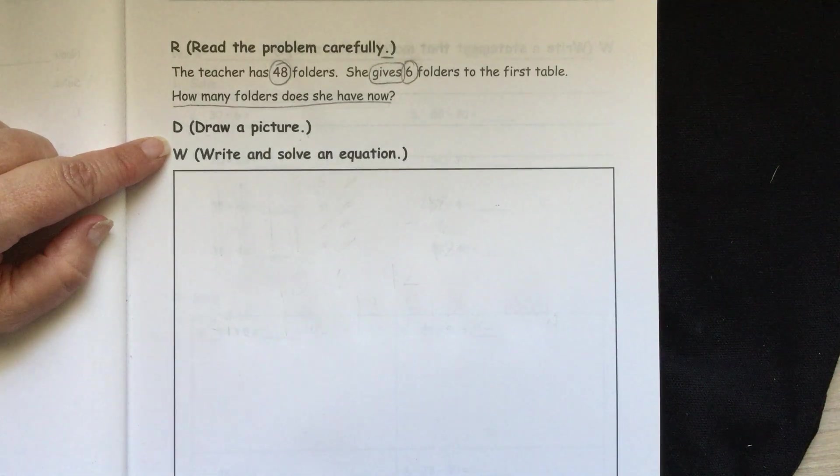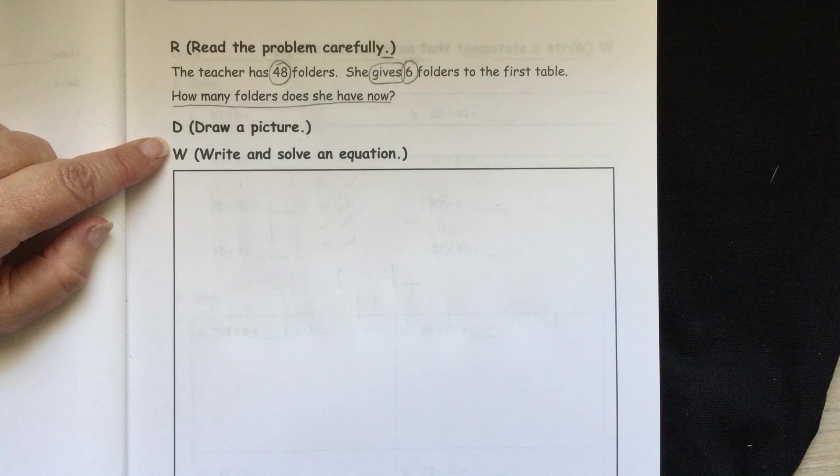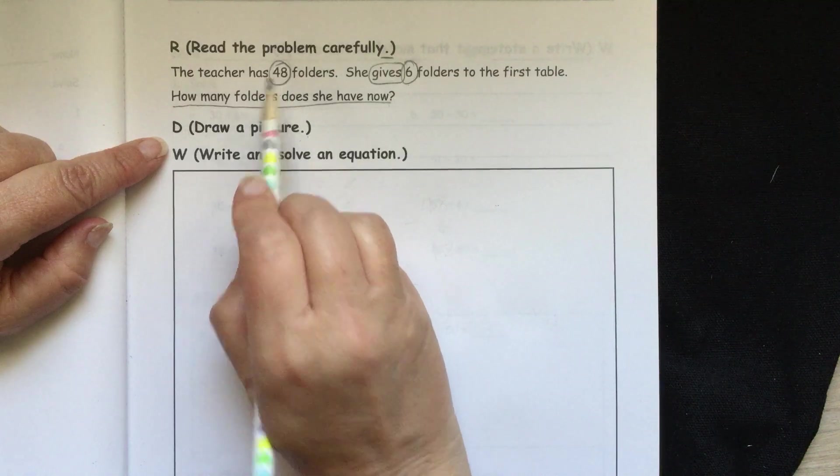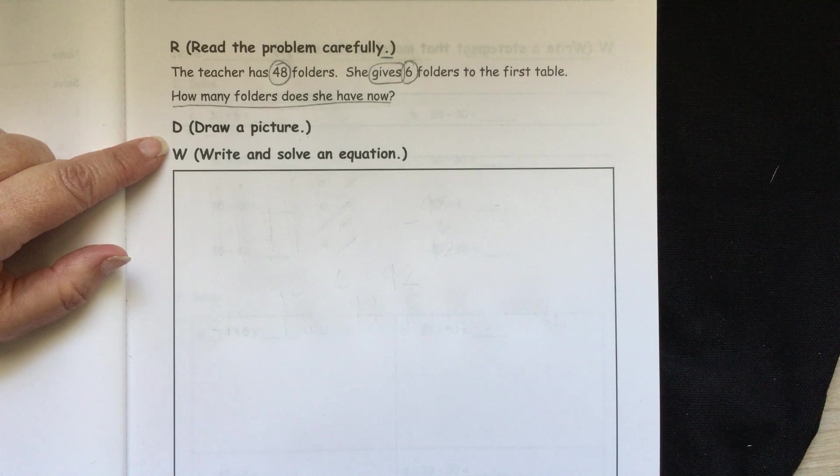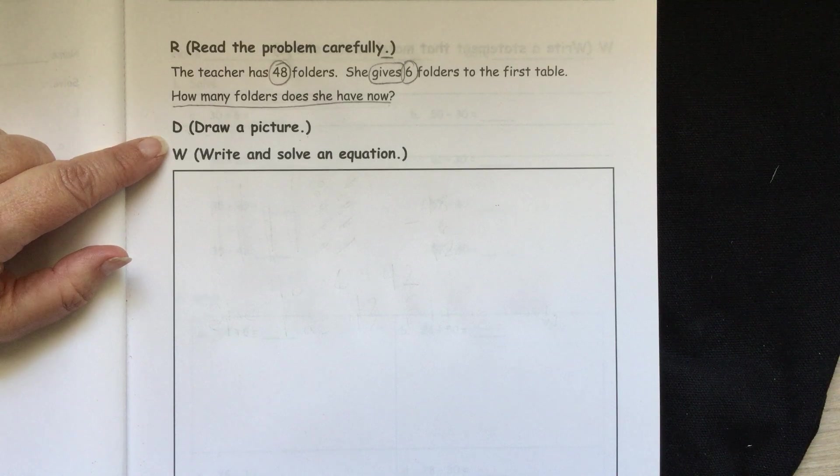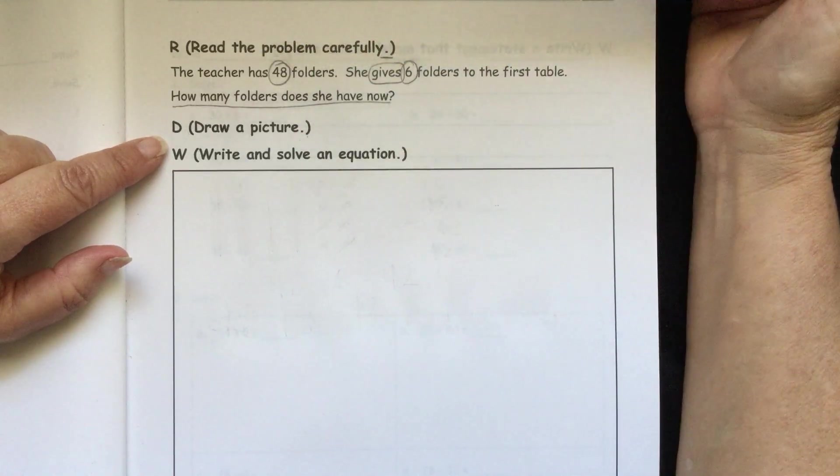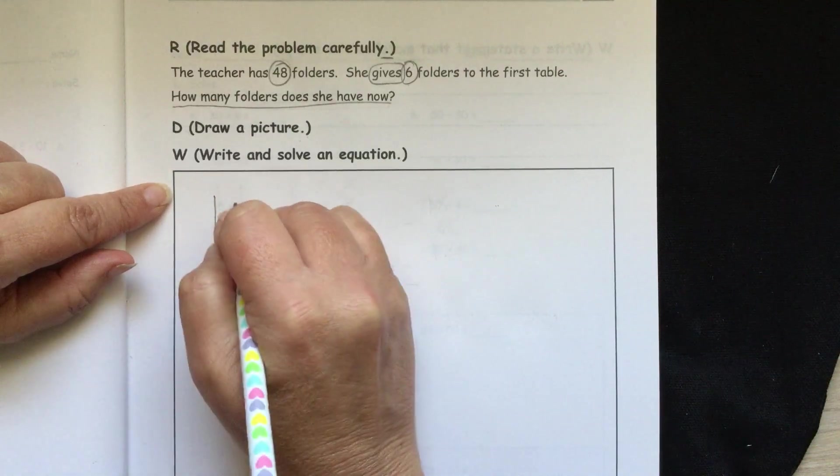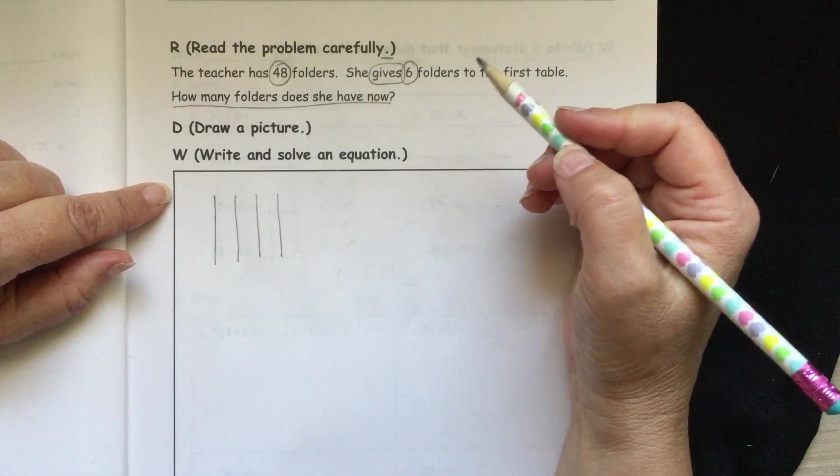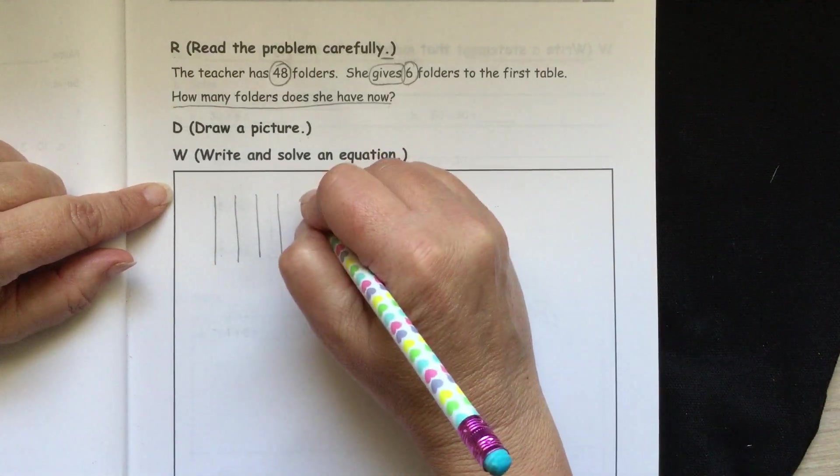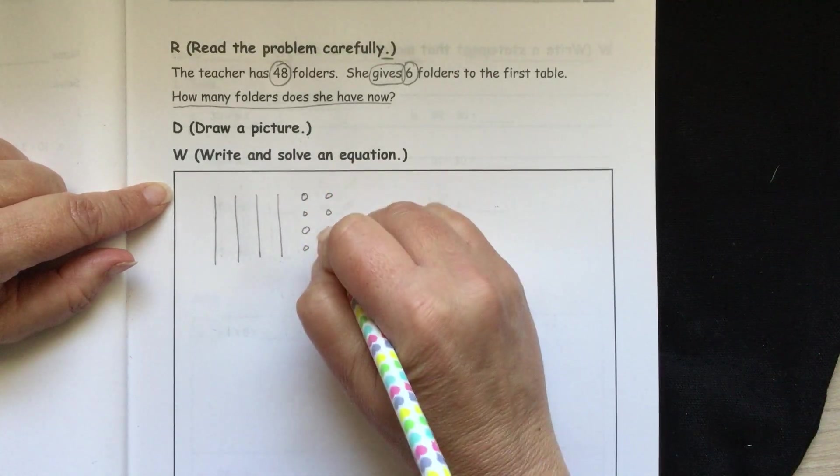We need to draw a picture. Since in our objective it said that we need to do tens and ones, we'll just draw tens and ones for our picture. So we need to start with 48 because that's how many your teachers started with. How many tens does 48 have? Well, when you think about it, the 4 is in the tens spot. So let's draw 4 tens. 1, 2, 3, 4. So that's 10, 20, 30, 40.